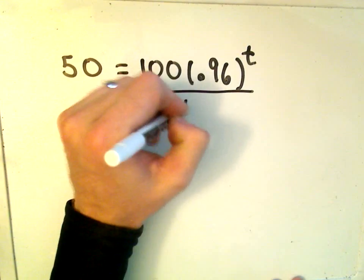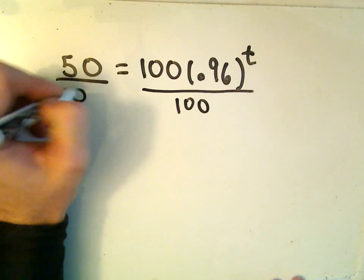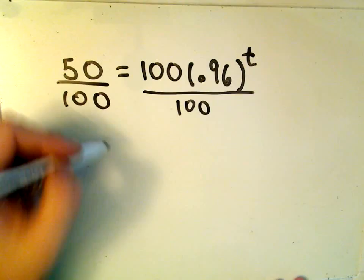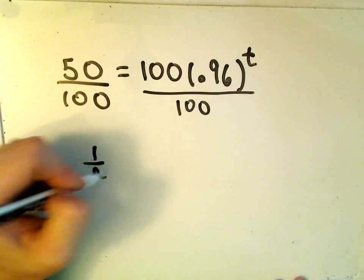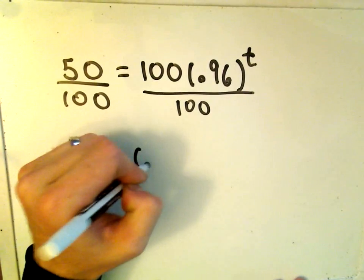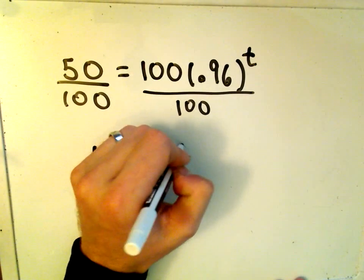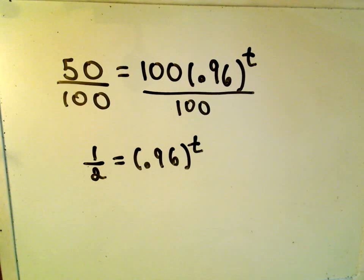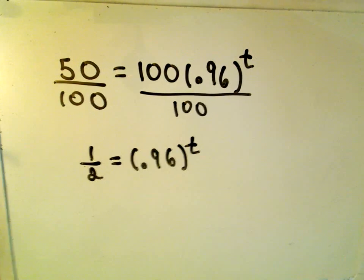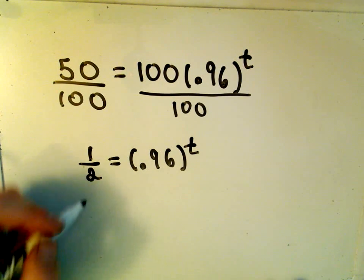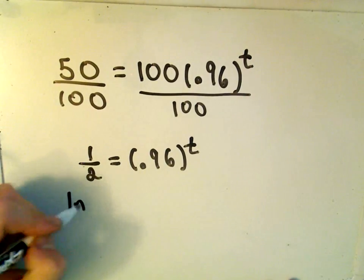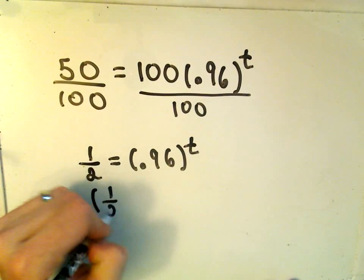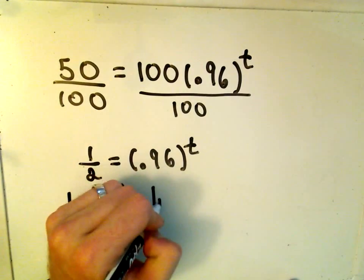So the first thing I would do is divide both sides by 100. 50 over 100 is 1 half times 0.96 raised to the t power. And at this point, you can use any logarithm that you want. I'm just going to take the natural logarithm of both sides. That's what's going to allow us to solve for t.